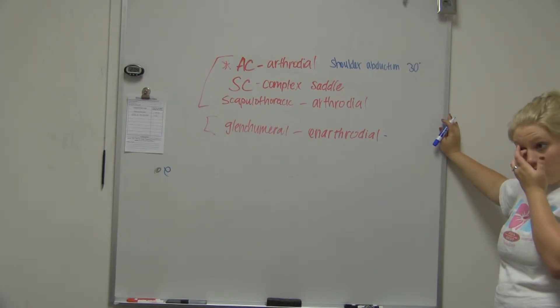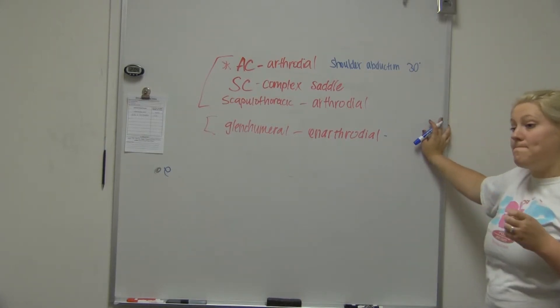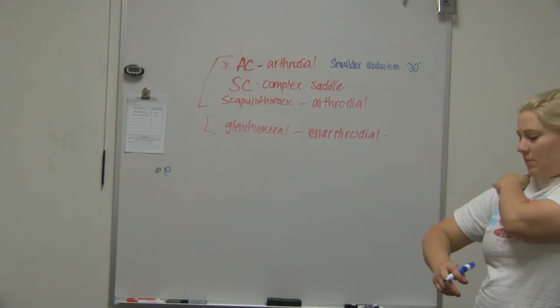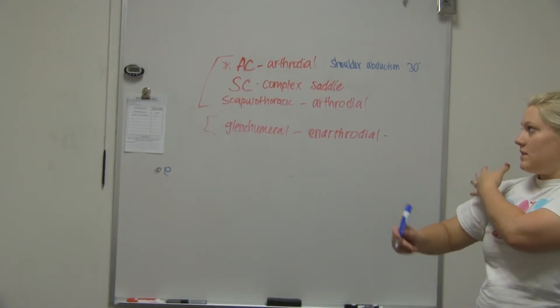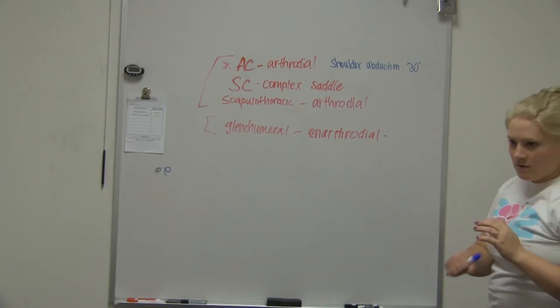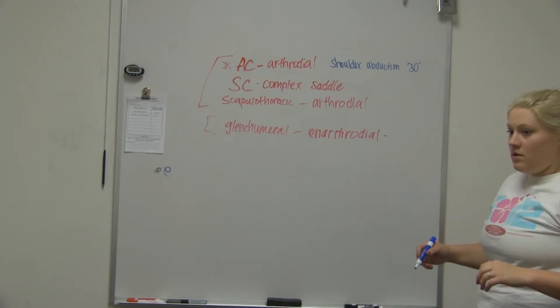I think glenohumeral and the AC joint are pretty close next to each other. Yeah, the glenohumeral is where the humerus comes and attaches to the scapula and then the AC is the clavicle attaching to the scapula. The glenohumeral is right below the AC joint.